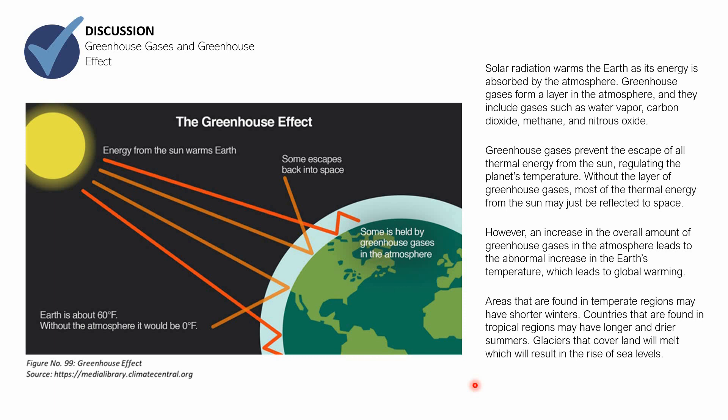That is it for the discussion about greenhouse gases and greenhouse effect. Greenhouse gases are the gases themselves. The greenhouse effect is the mechanism — the trapping of heat by the greenhouse gas layer in our atmosphere. The planet does this to regulate its own temperature. Without the layer of greenhouse gases, all the energy received by the planet would reflect back into space.